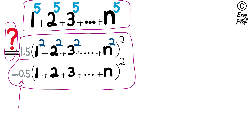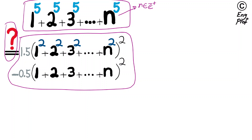This is very powerful because it says this equality is valid for any n as a positive integer — so n belongs to the set of positive integers. n can be anything including 1, 2, 3, 4, and up to infinity.